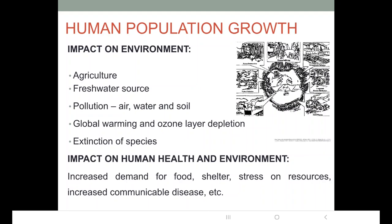Therefore there is a tremendous increase in earth's population. In the 1800s it was around 1 billion; by 2050, the United Nations projection is that earth's population will reach 9.2 billion. Currently we are 8 billion people all around the world, so from 1800 to now there is a tremendous increase in the global population.